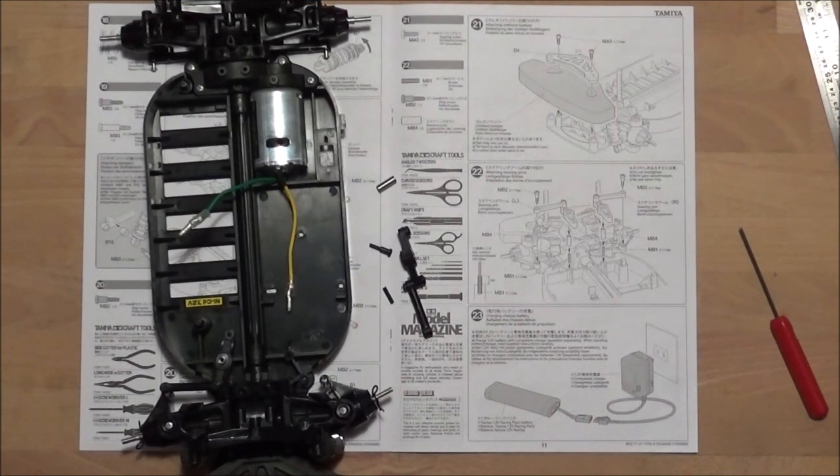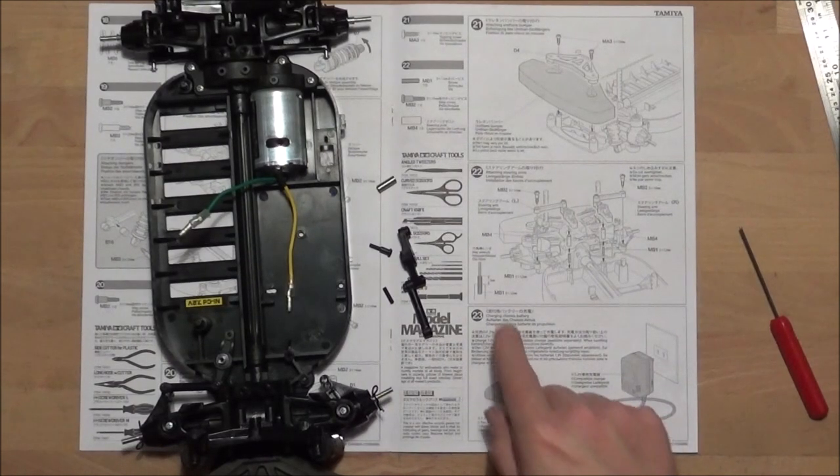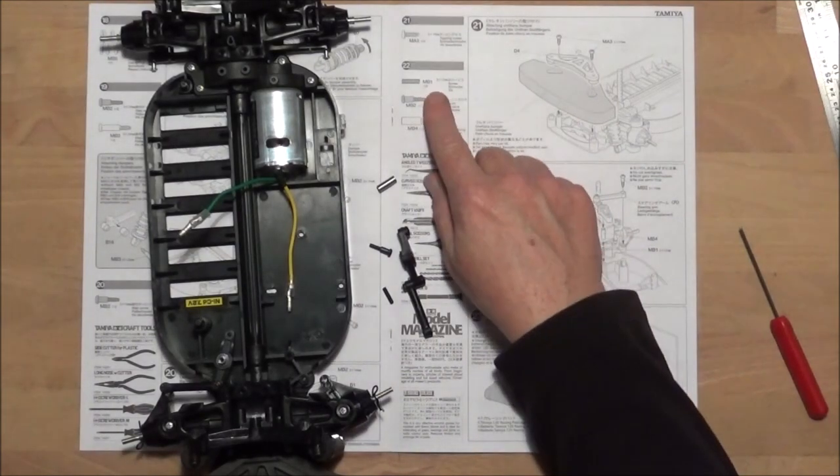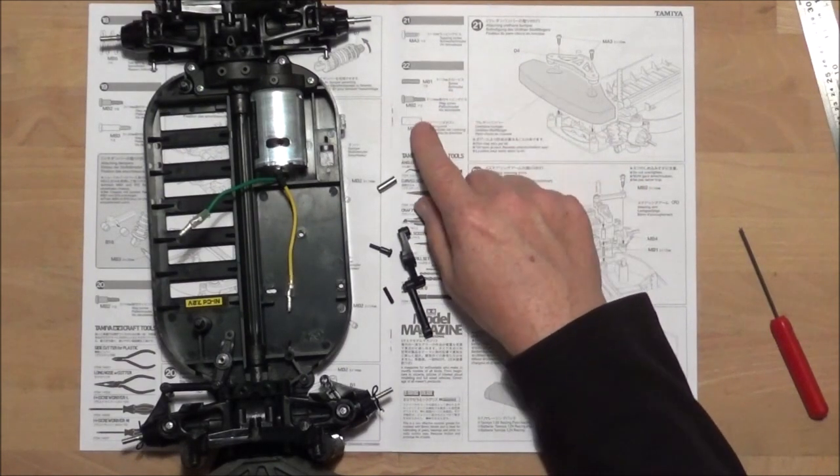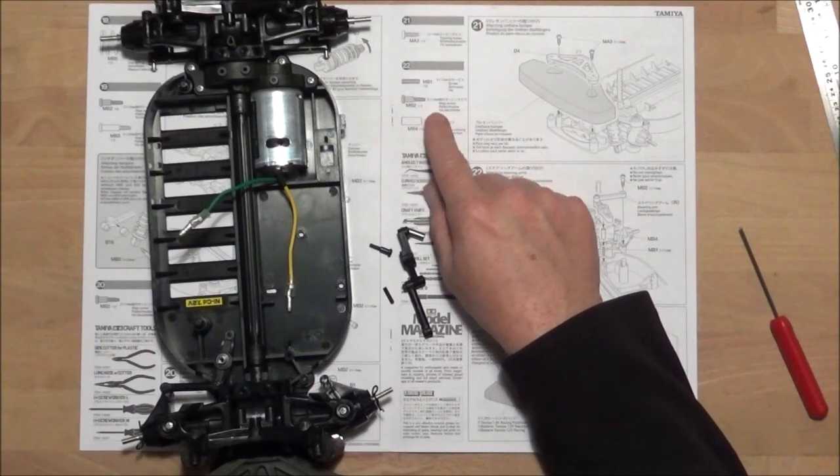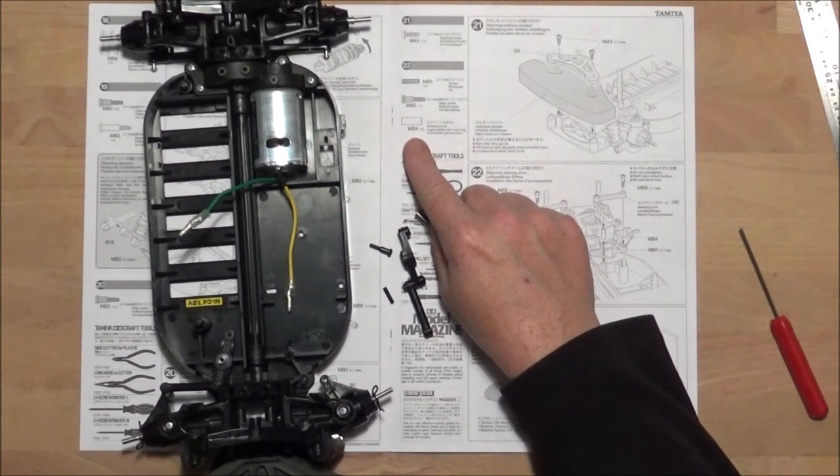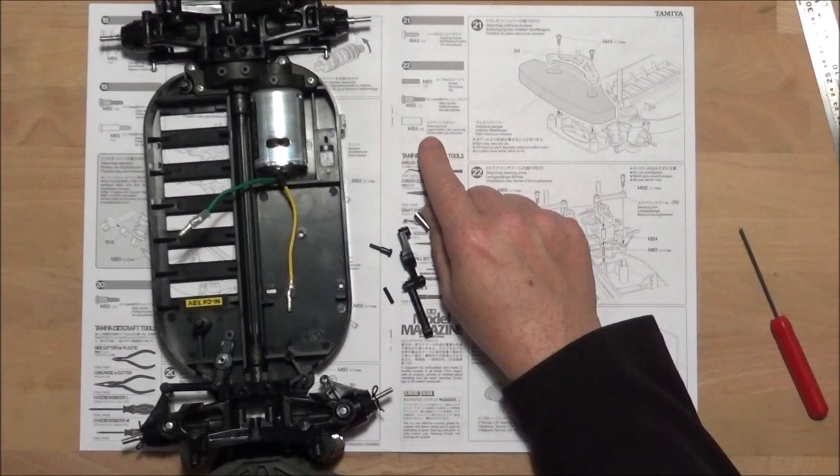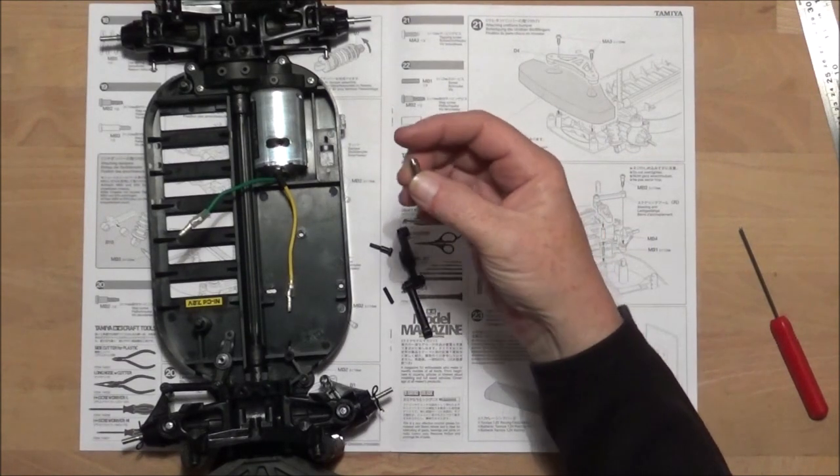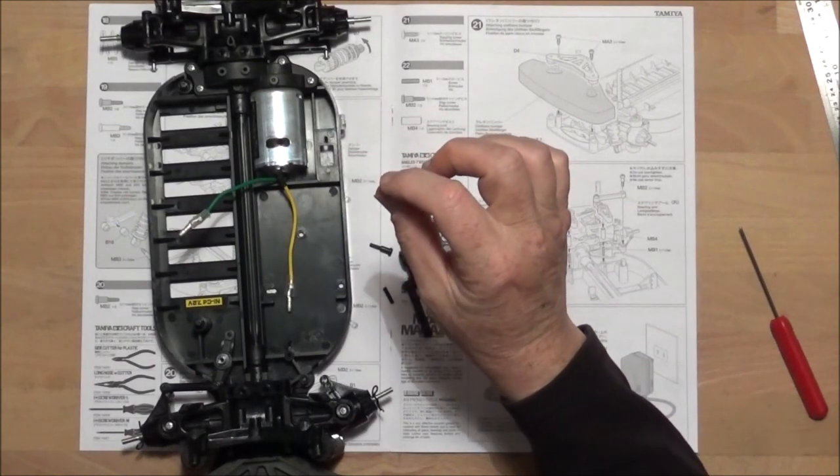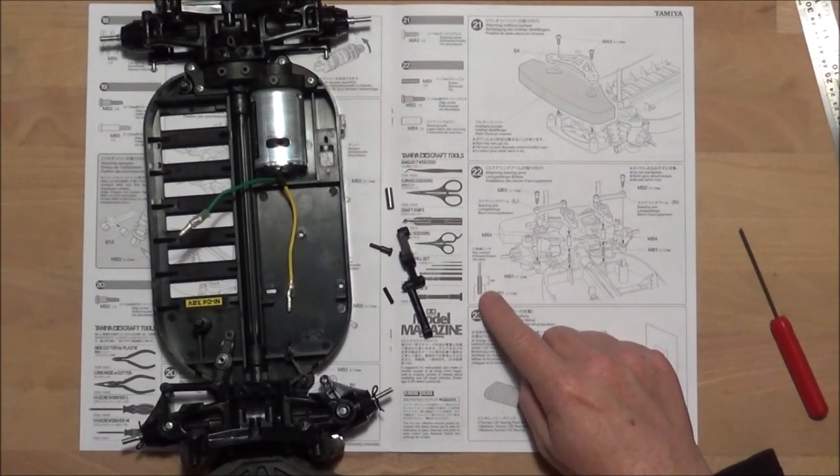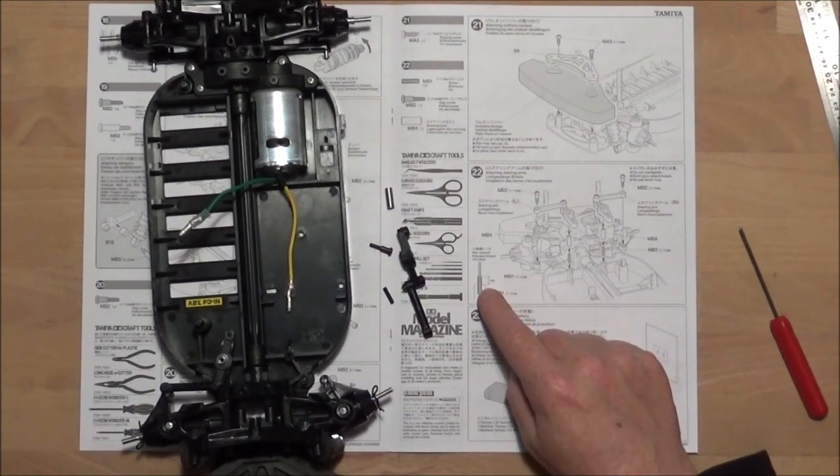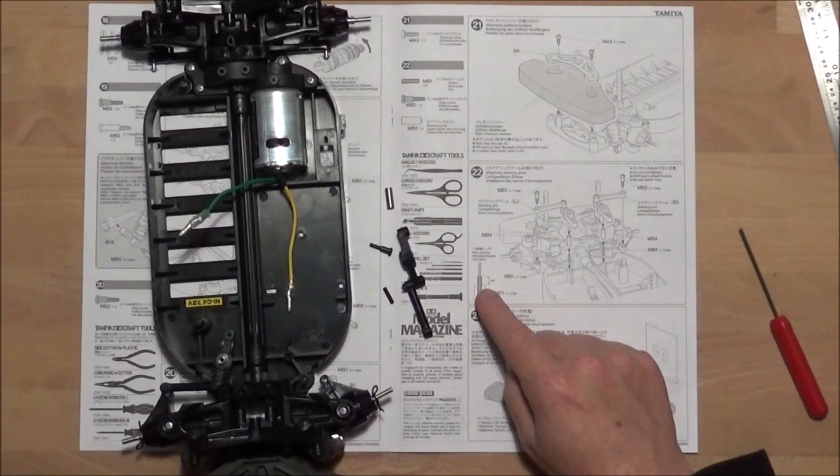Step 22 and really the last step in this video as step 23 is just putting the battery on charge, is attaching the steering arms. For this we're going to need two MB1 which is 3x12mm grub screw, two MB2 which is 3x14mm step screws, and two MB4 which are steering posts, these stainless steel posts that have threaded all the way through. There's a note on step 22 telling you to leave a 5mm protrusion on the MB1 grub screw.